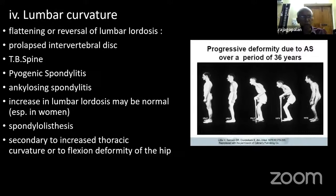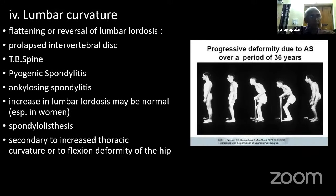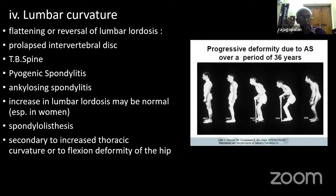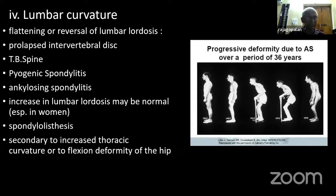If there is a reversal of the normal lumbar lordosis, what are the causes? A simple cause is a spasm where the lumbar lordosis will be absent. In ankylosing spondylitis it may go into the opposite as well. But beware that increased lumbar lordosis could be normal, especially in women. A flexion deformity of the hip, as you know from the Thomas test, produces secondary increased lumbar lordosis. So it's not necessarily only for a spinal lesion.